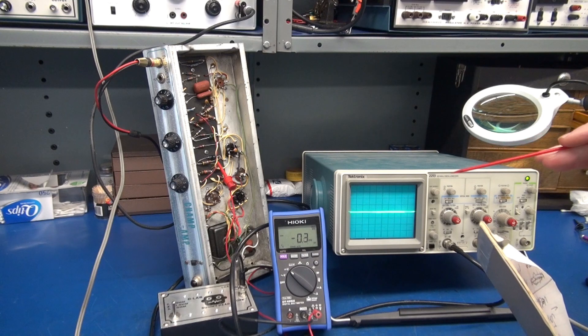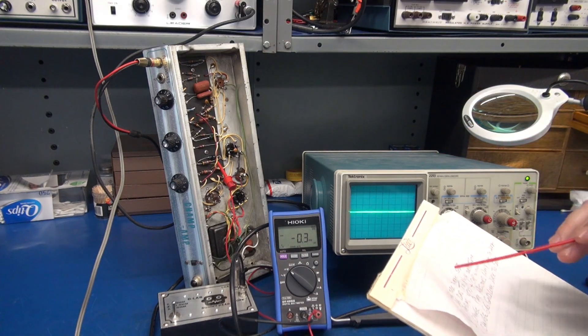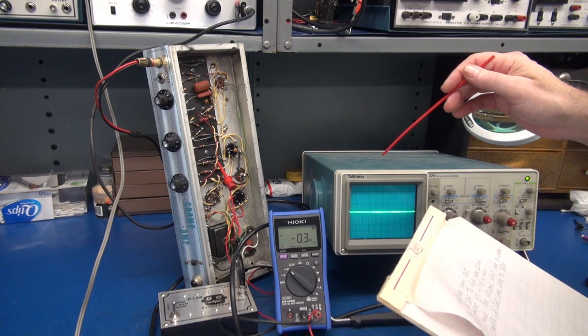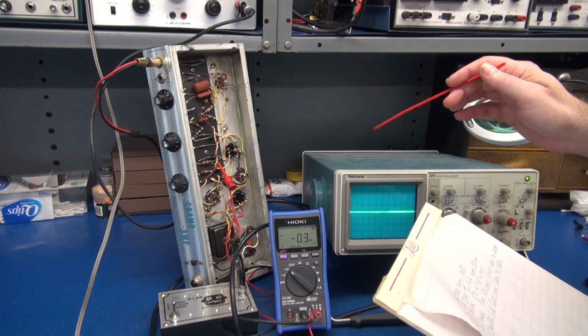So here are the items that I'll be addressing before we retest. I checked the 6V6 and it is weak. It's down to about 50 percent emissions.